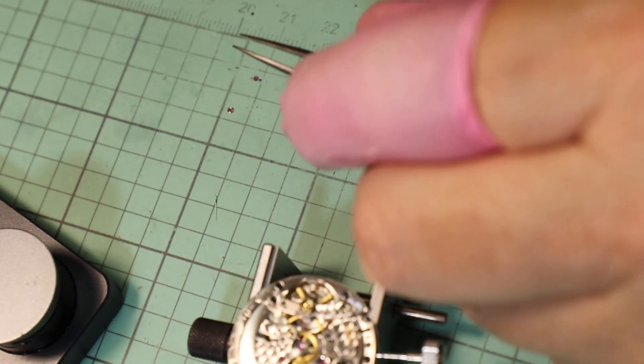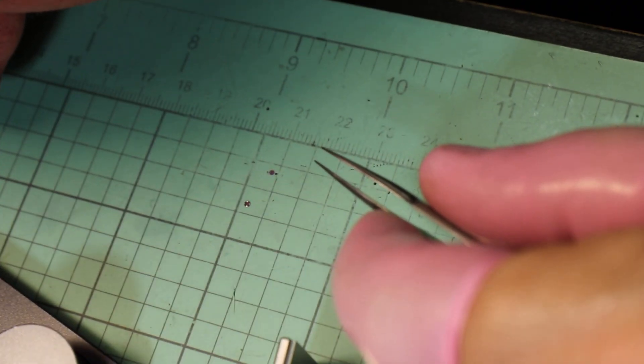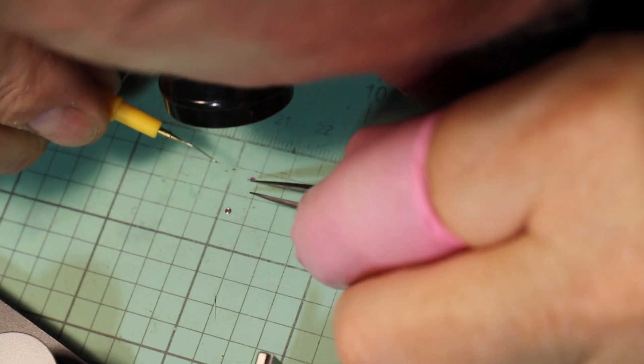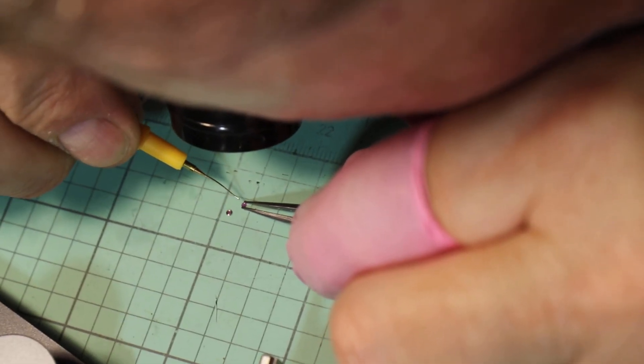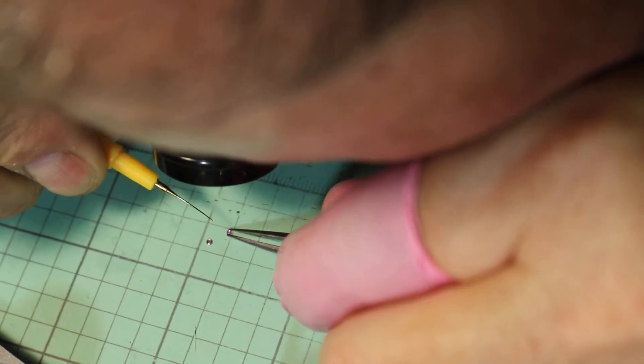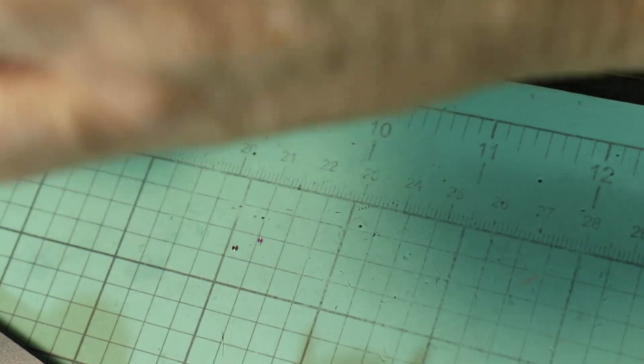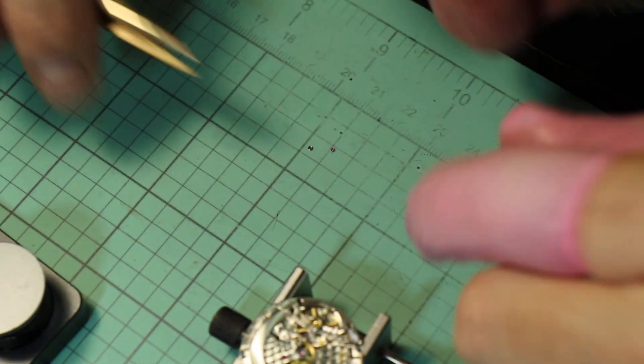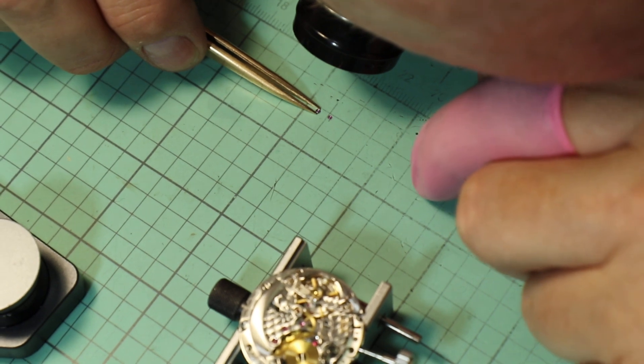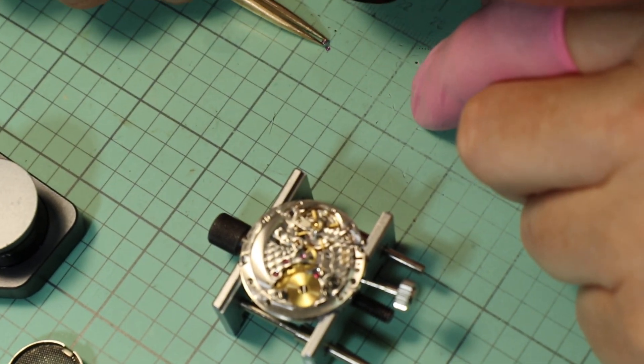So now we're going to put that three-fifths drop on the balance cap jewel. I need a little more. Just like that. Now if you had too much oil on your cap jewel, it's going to stick to your tweezer and you're going to know you're in trouble. Then you start over. You got to clean that jewel, get it nice and clean, dry and clean, and then start over. So we're not making that mistake.